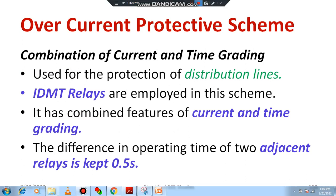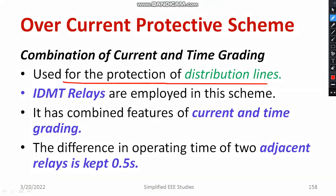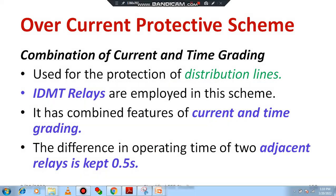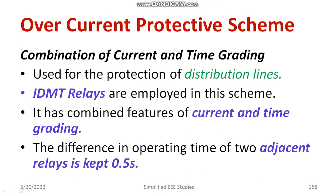Later we will discuss the combined current and time scheme. It is used for protection of distribution lines. IDMT relays are employed in this particular scheme. It has the combined features of both the time graded and current graded systems, taking some advantages from each. The difference in operating time of two adjacent relays is usually maintained at a certain constant. It is always advisable to use the combination of current and time graded schemes to get advantages from both.